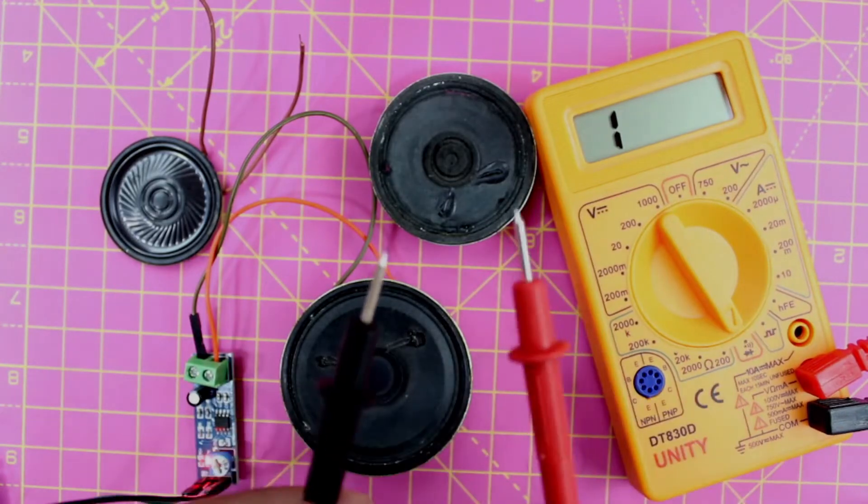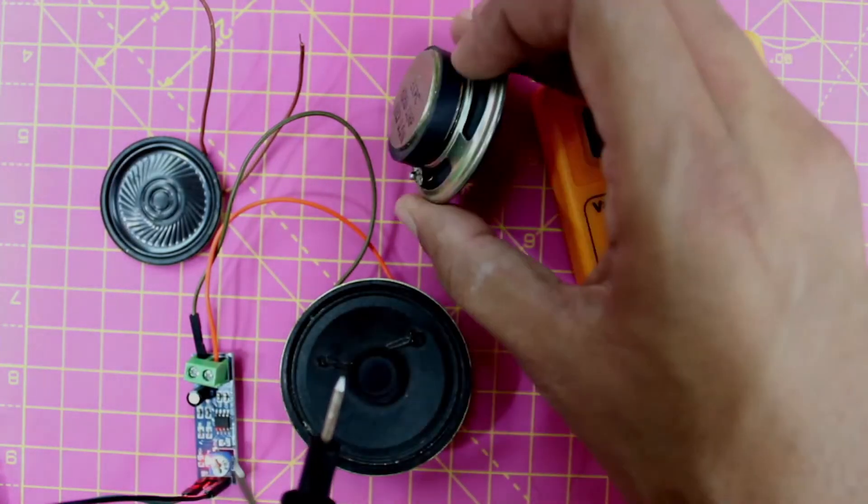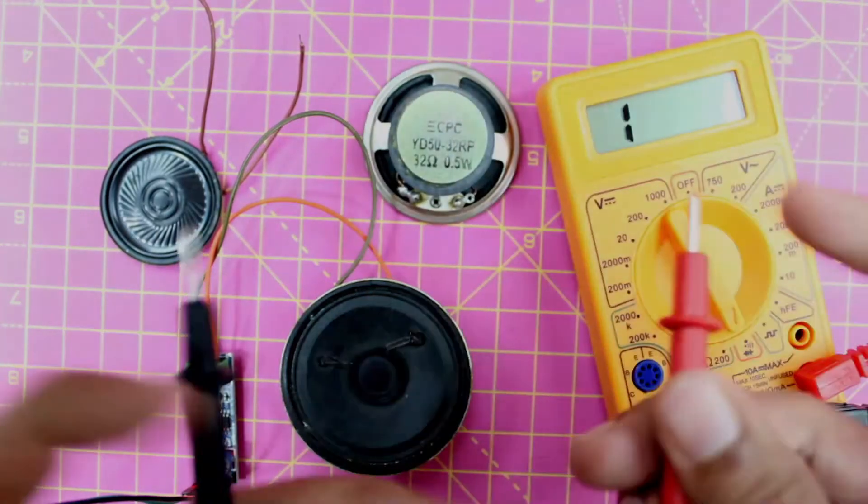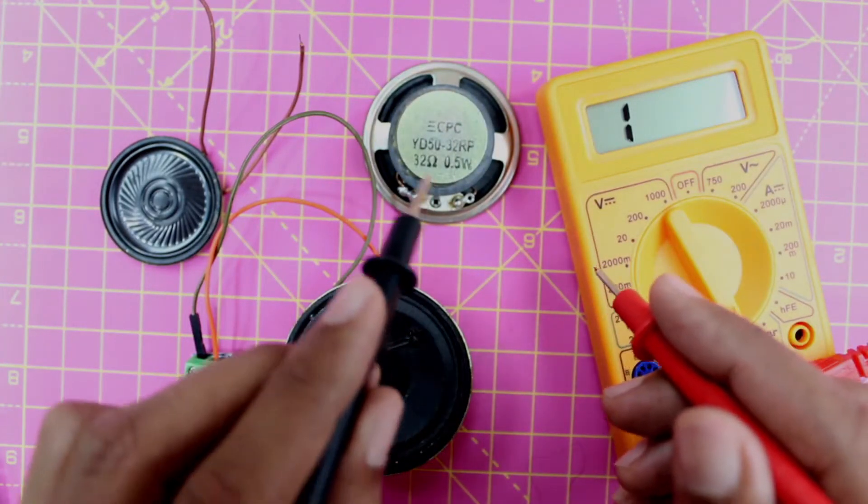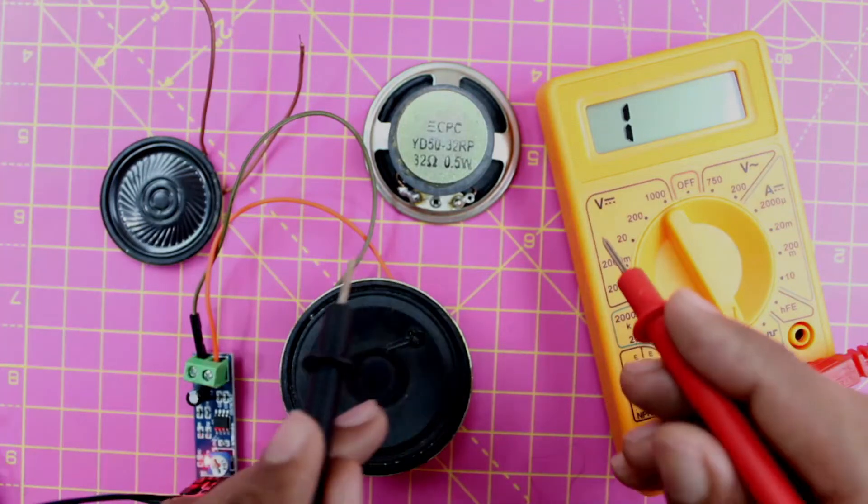Take the probes of your multimeter and check for continuity between the two terminals of your speaker. It doesn't matter where you place the probes—there's no polarity here. Just check for continuity across the terminals.